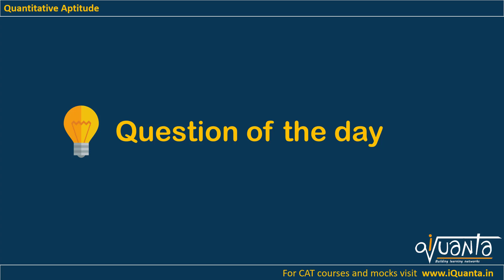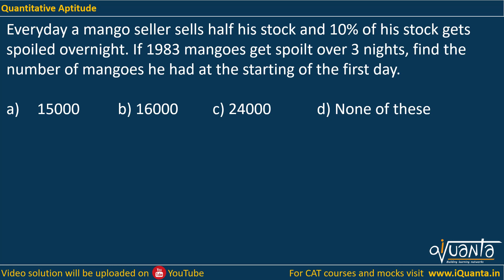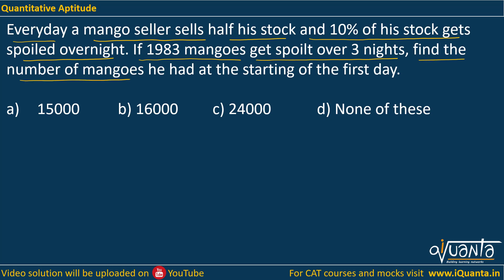Hello everyone. Today's question of the day is based upon percentages. The question is: every day a mango seller sells half his stock, and 10% of his stock gets spoiled overnight. If 1983 mangoes get spoiled over three nights, find the number of mangoes he had at the starting of the first day.